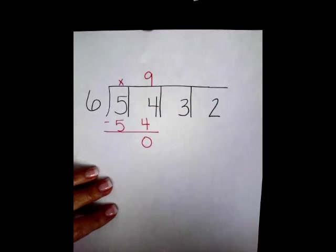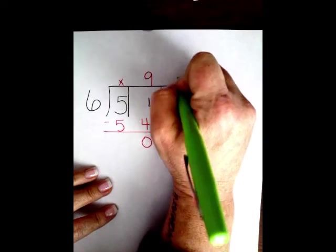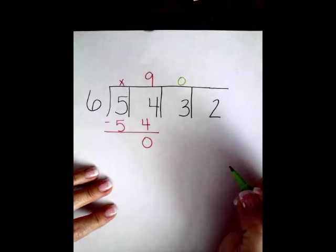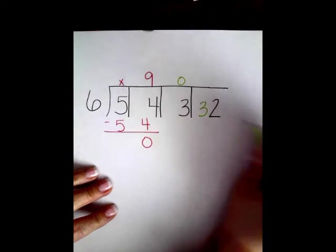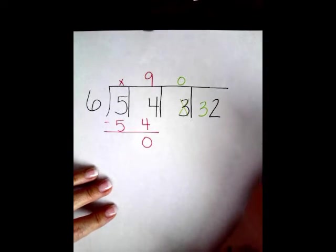Now, 6 doesn't go into 3. So, I have to put a 0 there. I'm just going to move my 3 over. Crossing it off so I don't try and use it again.